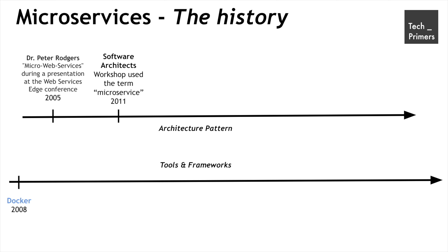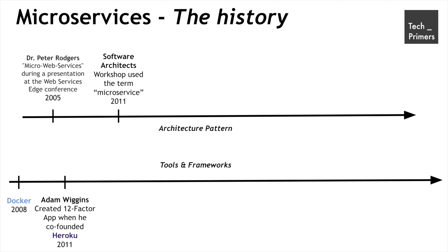In 2011, a bunch of software architects met for a workshop, and in that particular workshop they ended up using a term called microservice, then splitting their architecture into smaller chunks. In the same year, Adam Wiggins created something called a 12-factor application, which is the basis for building microservices and microservices-based applications to deploy on the cloud. He created these 12-factor principles when he was struggling to deploy an application to Heroku, a platform-as-a-service which he created to run web services.